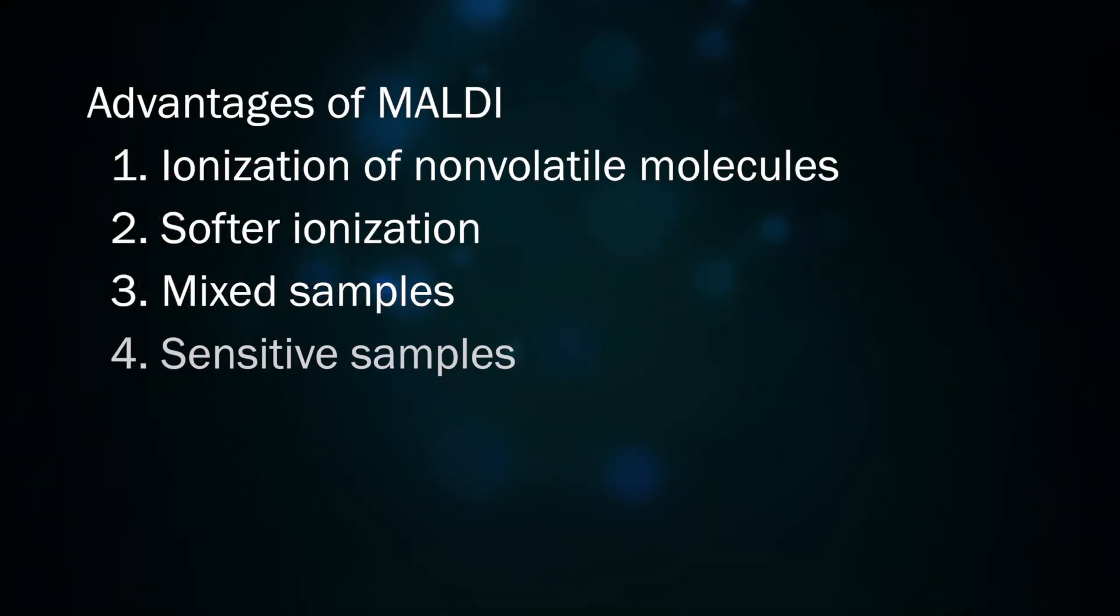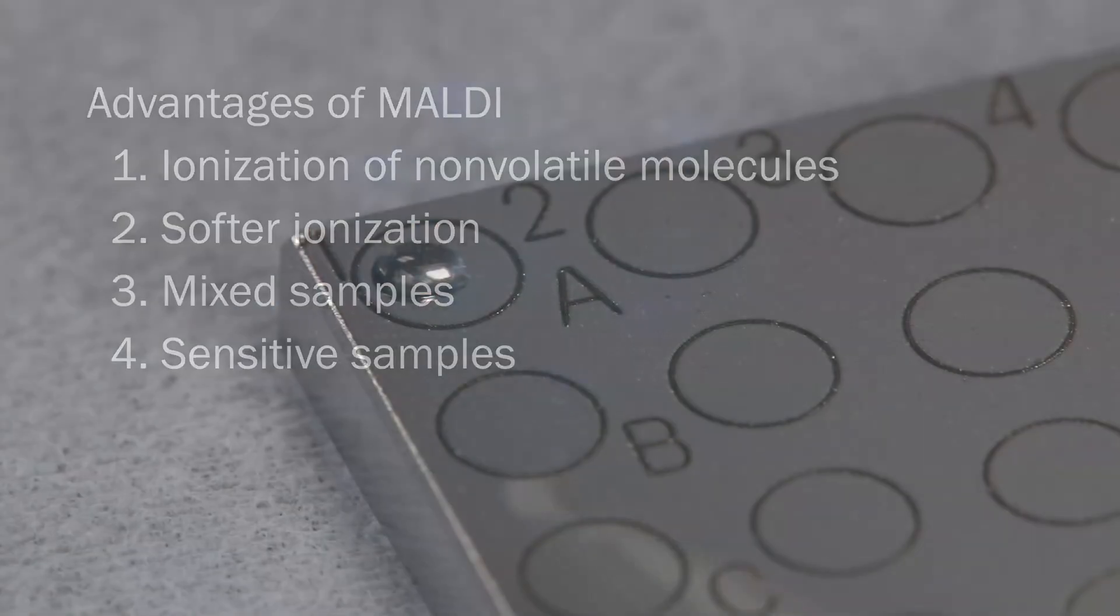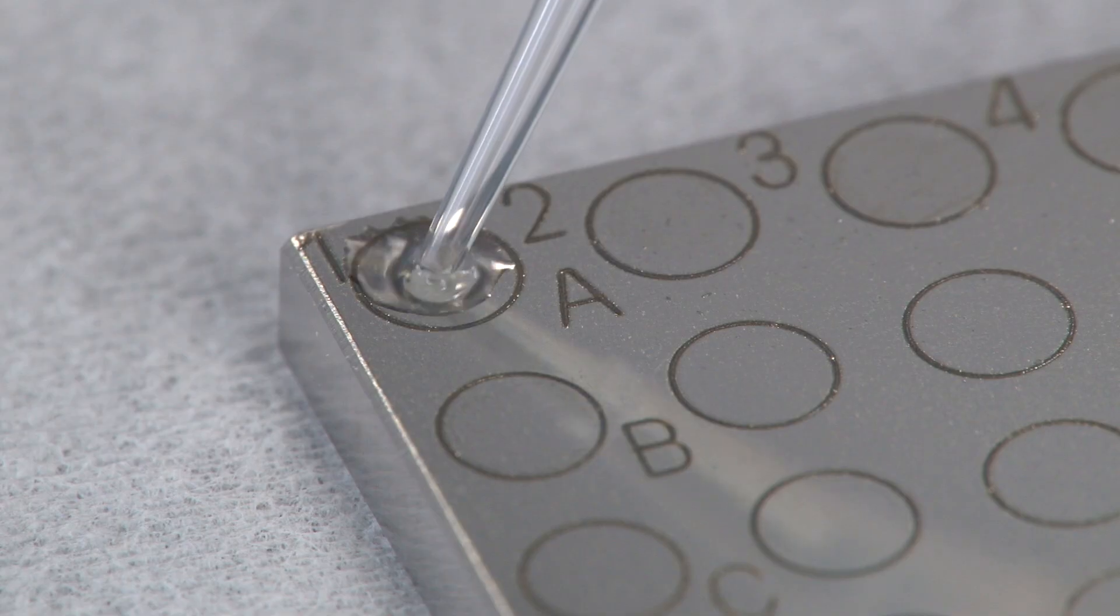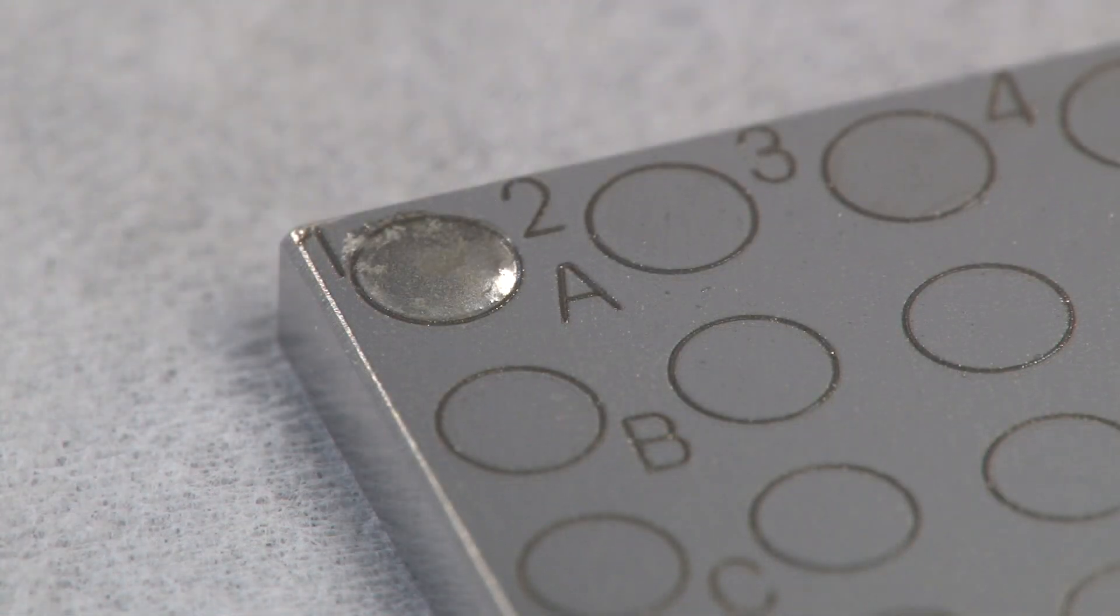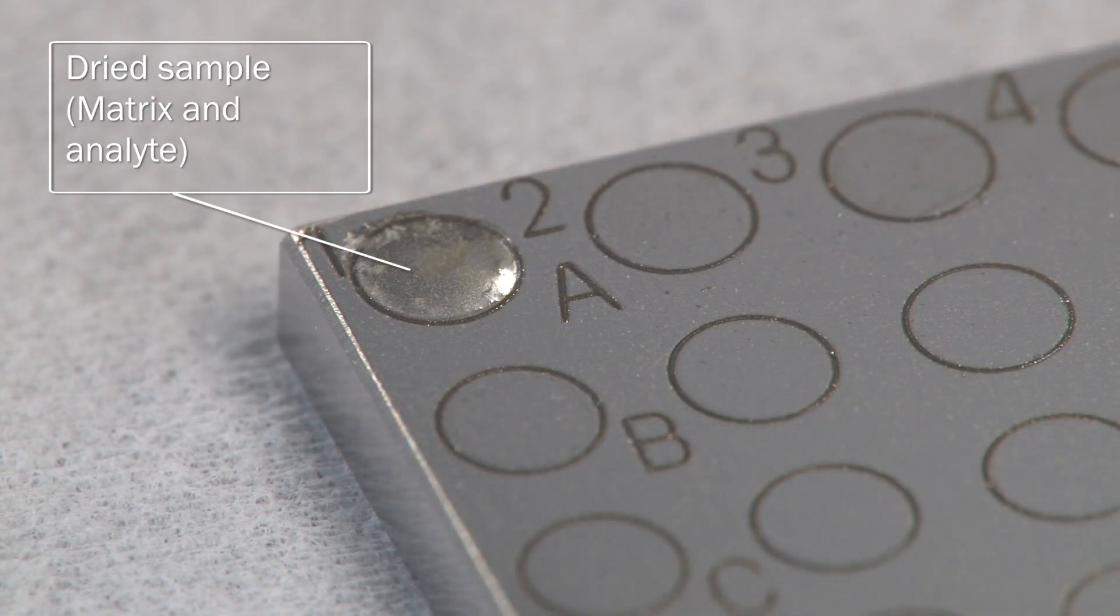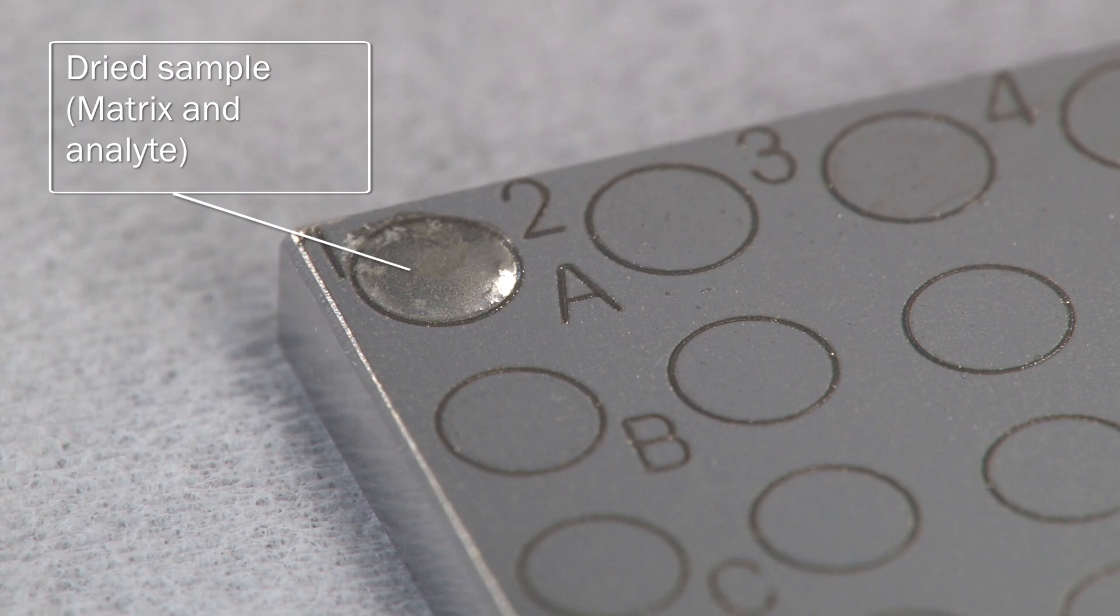Because there's no heated injection chamber, like in other forms of ionization, MALDI allows for the analysis of sensitive molecules that would decompose under high temperatures. Finally, MALDI allows for the preparation and storage of a solid sample. Because the solvent is allowed to evaporate from the matrix analyte sample solution, a solid sample spot is left behind on the target plate.